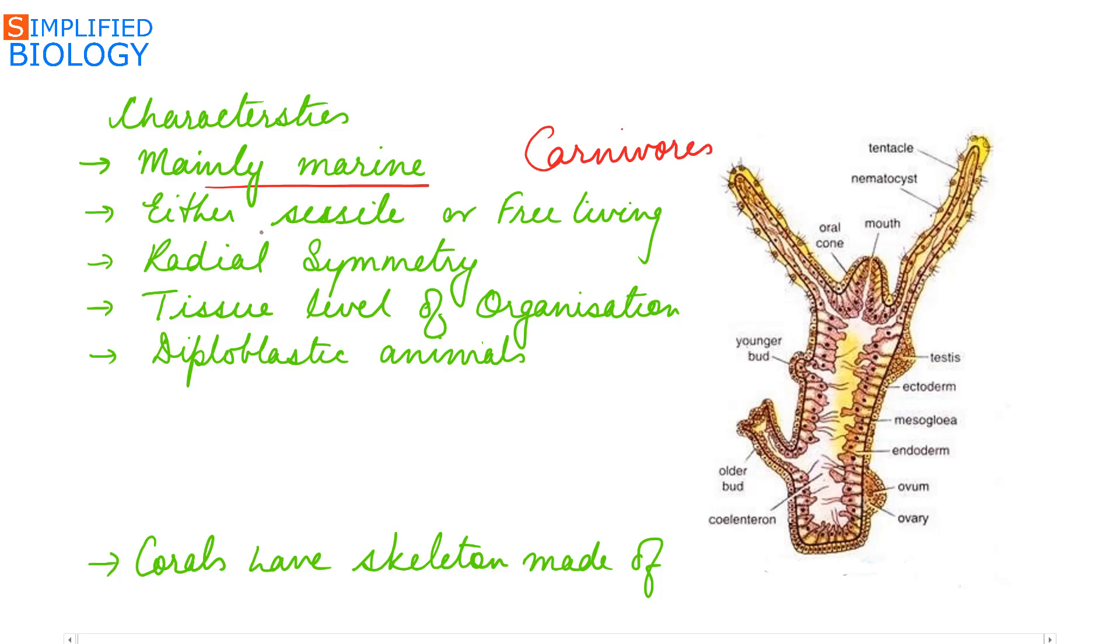They are either sessile, that is can't move, or free living. Body shows radial symmetry, means it can be divided into two equal halves at any plane passing through the center.